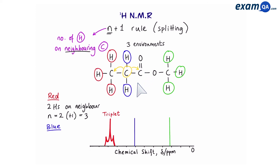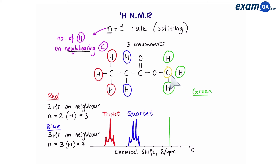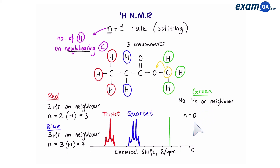In total there are three hydrogens on the neighboring carbons of the blue peak. Three plus one equals four, so the blue peak splits into a quartet. Finally, the green hydrogens are on a carbon next to an oxygen, so there are no hydrogens on the neighboring atom. Therefore n equals zero, zero plus one equals one, and the green peak stays as a singlet.